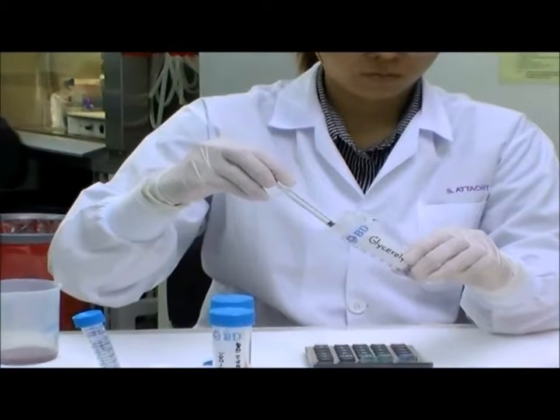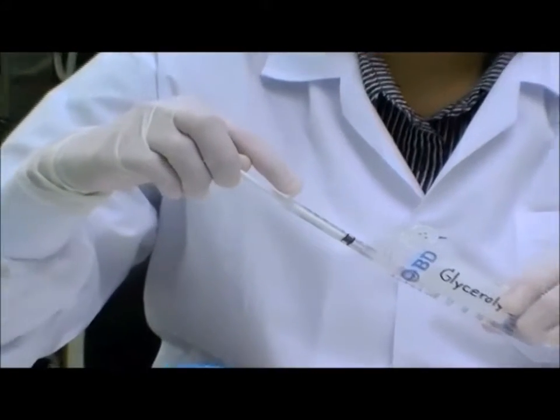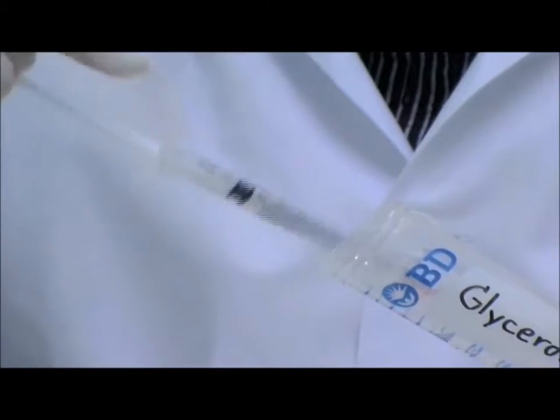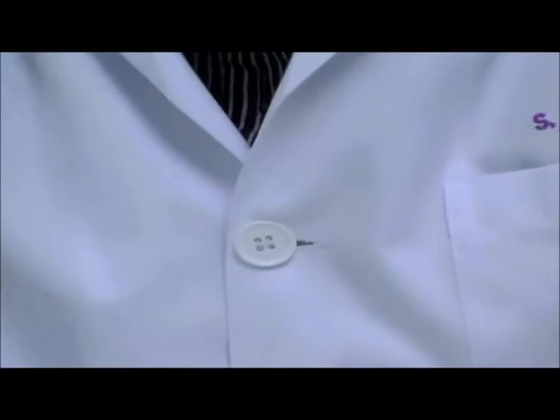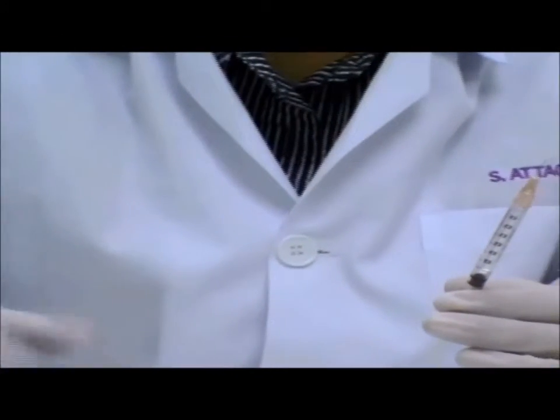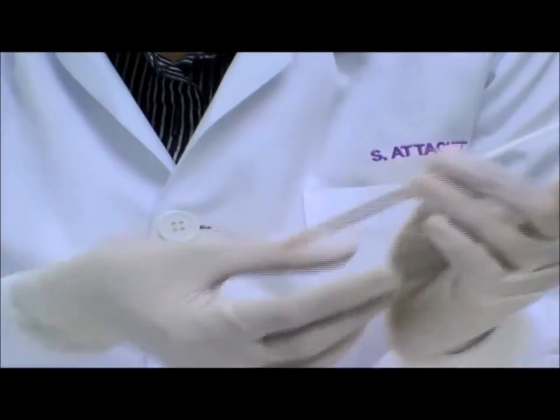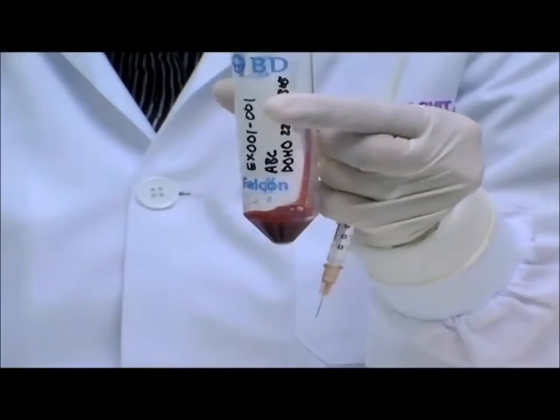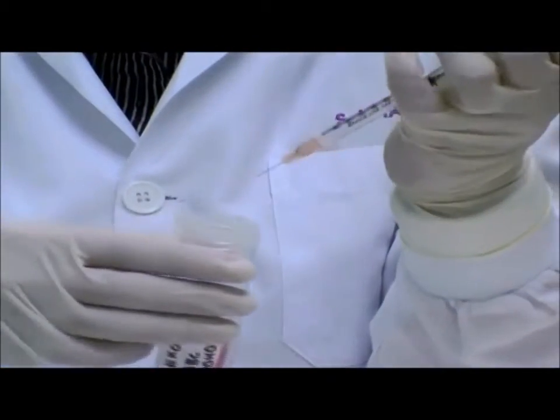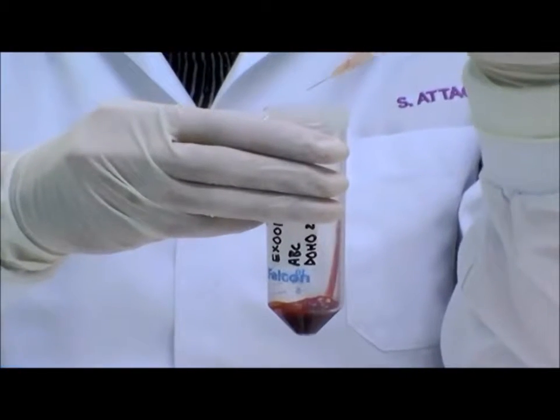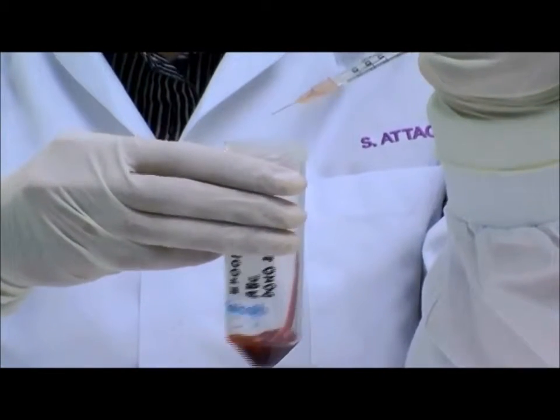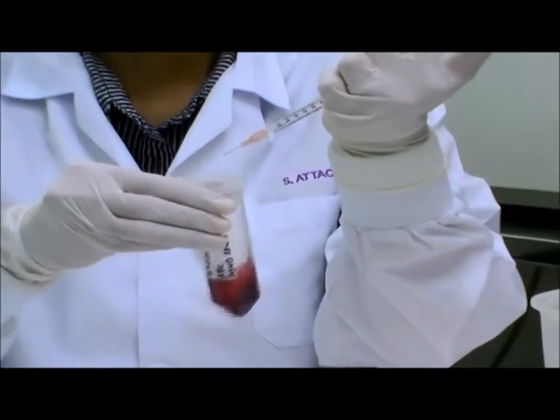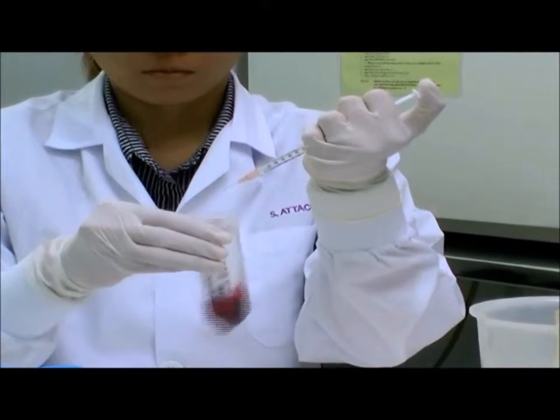Use the 1 ml syringe to measure out the volume of the glycerolite. Add the glycerolite drop-by-drop to the packed red cells with continuous shaking. This part of the procedure must be performed very slowly and should take no less than 3-5 minutes.